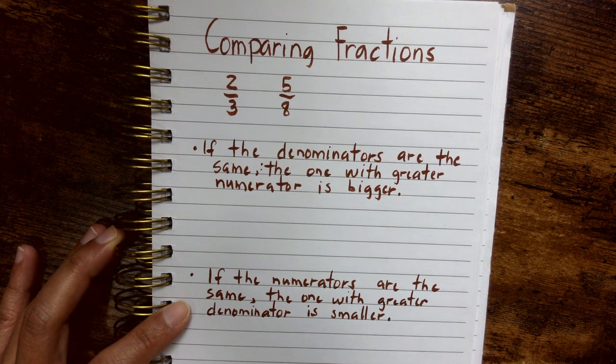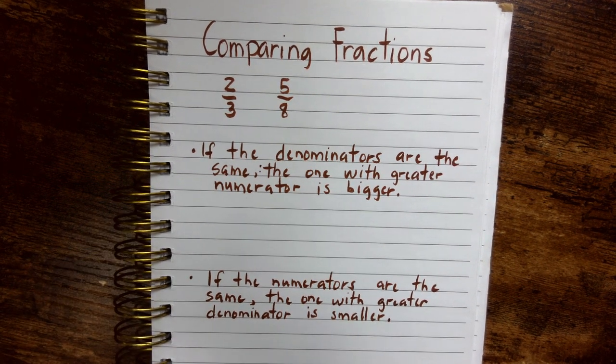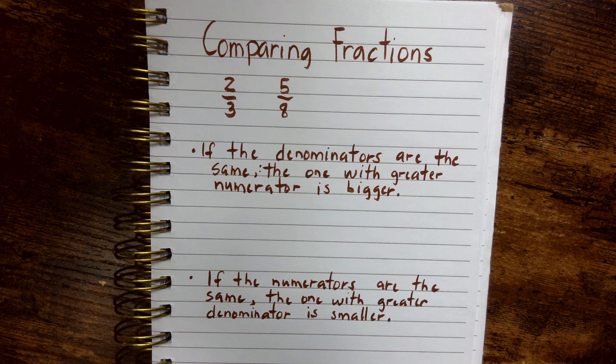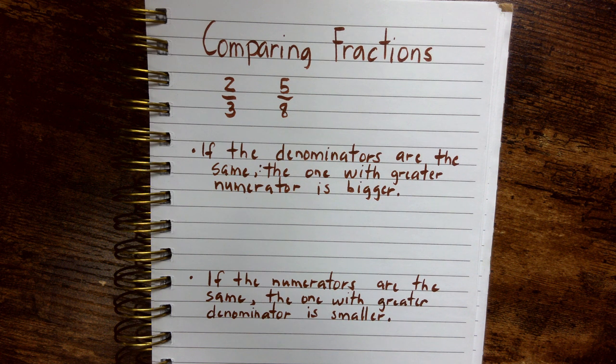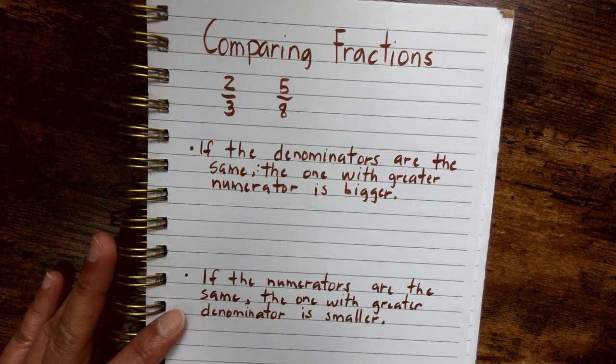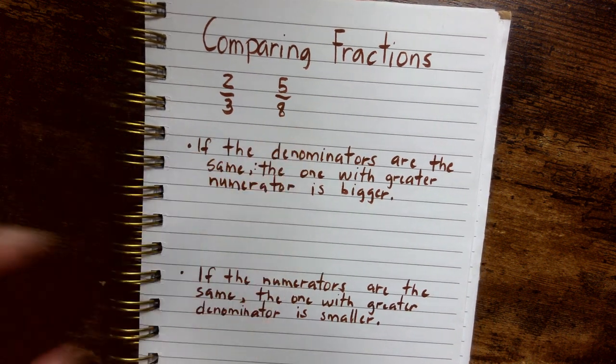Hello everyone, in this video I'm going to show you how to compare fractions with different numerators and different denominators. So here's an example: two-thirds compared to five-eighths.